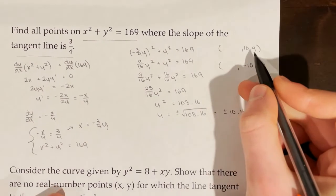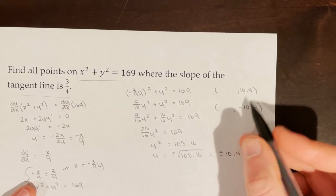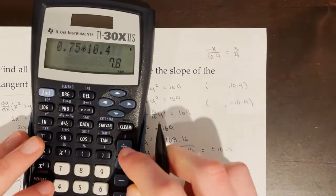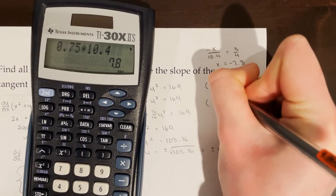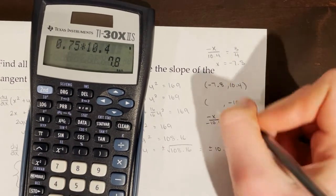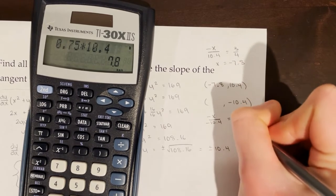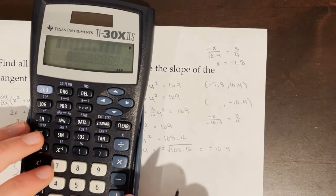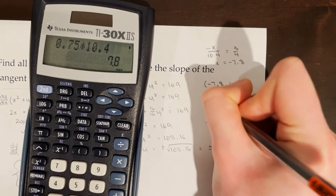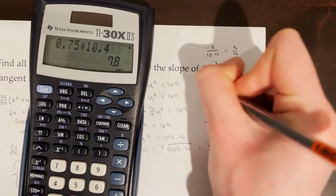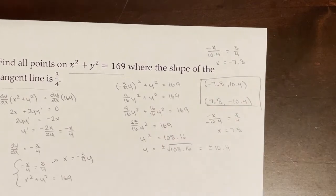Plugging positive 10.4 in for y gives x = -7.8. Plugging in negative 10.4 gives x = positive 7.8. So my two points where the slope of the tangent line is 3/4 are (-7.8, 10.4) and (7.8, -10.4).